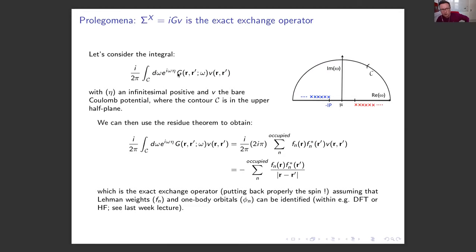A reminder from last week: we looked at the operator that is a product of the Green's function with the bare Coulomb potential, under the form of a small integral with eta — a small positive infinitesimal — allowing closure in the upper half plane. We demonstrated that the JV operator is exactly the exact exchange operator, provided you can identify the Lehmann weights with one-body molecular orbitals, which is valid for independent electron systems.